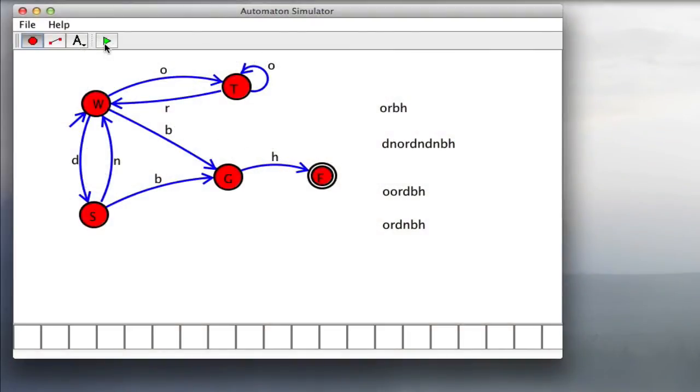Here we have the state machine in a simulator. The states and transition edges are labeled as in my hand-drawn diagram. Let's try running some of those strings through it and see what happens.